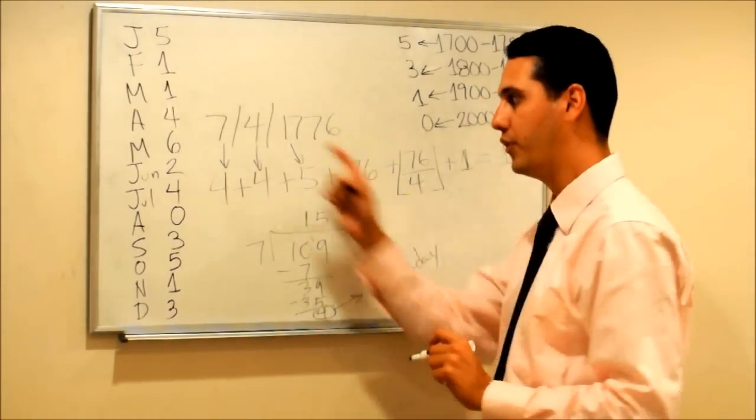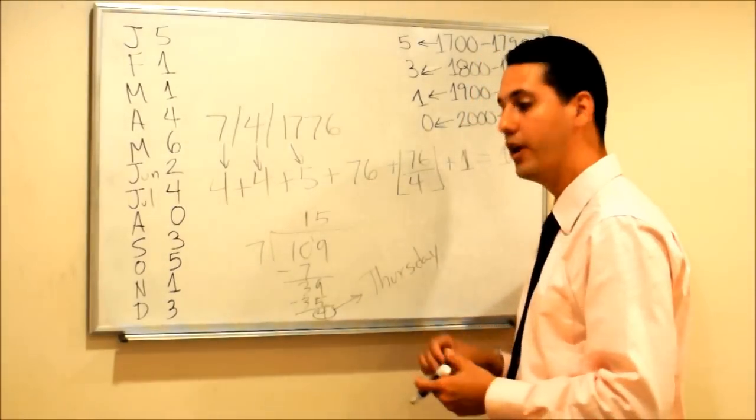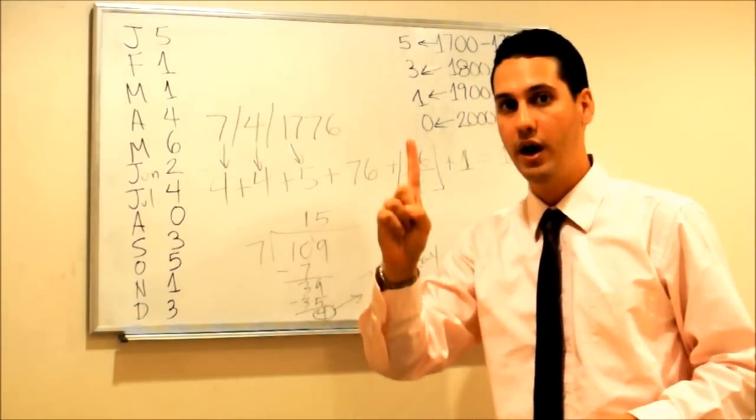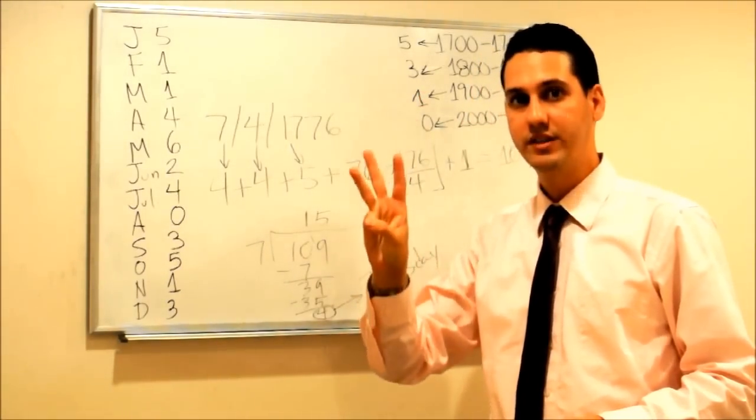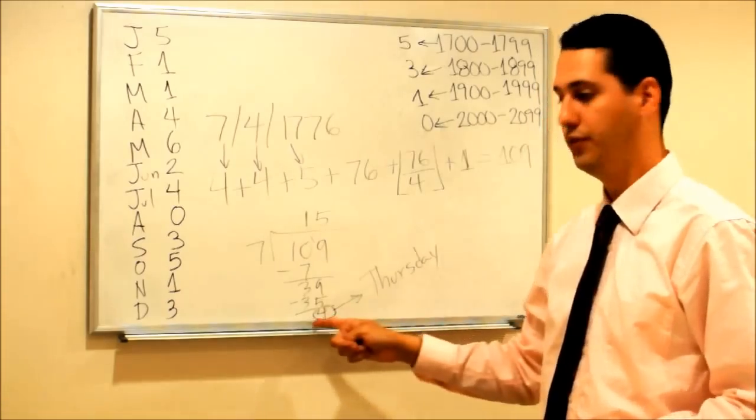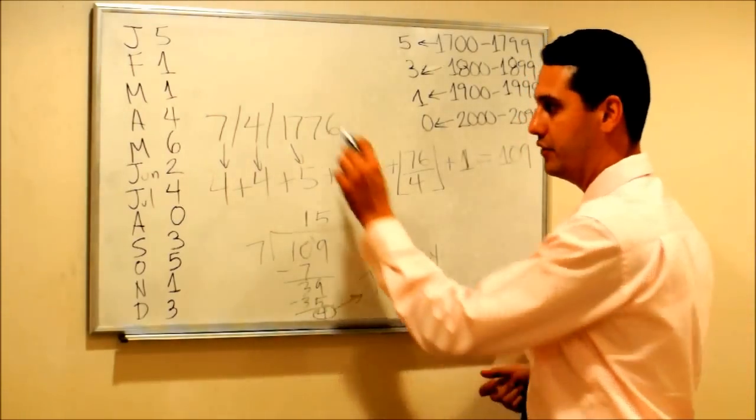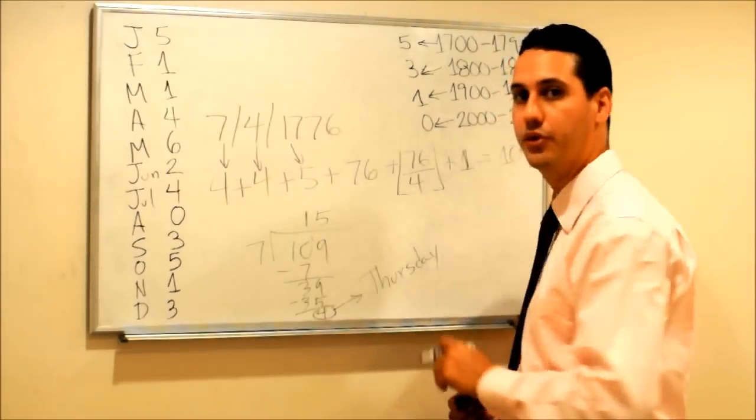Check this value: the value of the remainder is 4. What this means is that the day of the week corresponding to July 4th, 1776 is the fourth day of the week. Starting by Monday as 1, Tuesday is 2, Wednesday is 3, and Thursday is 4. That means that July 4th, 1776 was a Thursday.